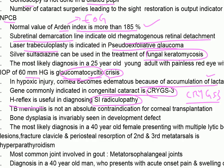TB meningitis is not an absolute contraindication for corneal transplantation. The most likely diagnosis in a 40-year-old female presenting with multiple lytic bone lesions, fracture of the clavicle, and periosteal resorption of the second and third metatarsals is hyperparathyroidism.